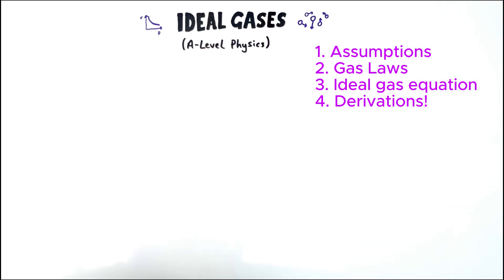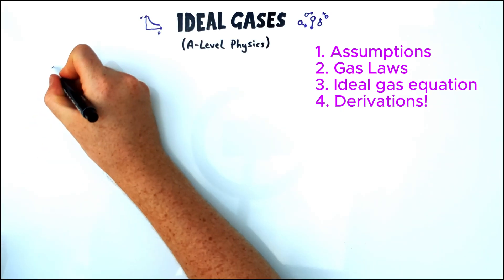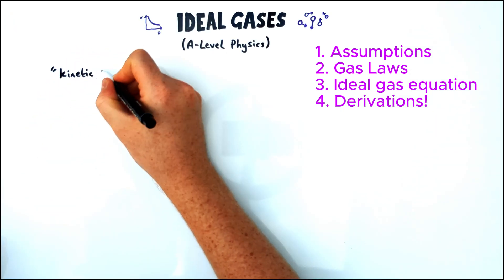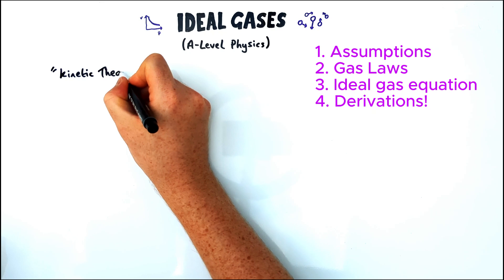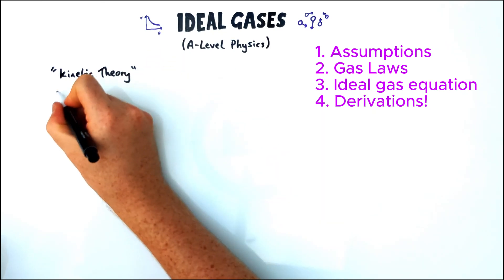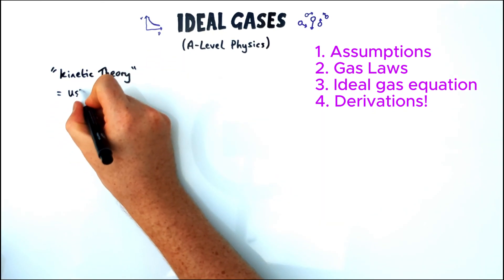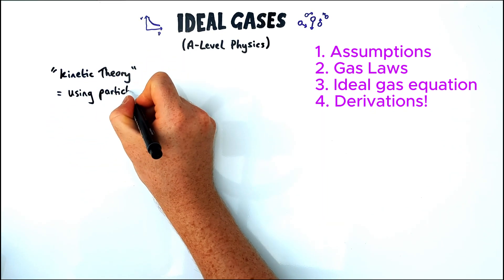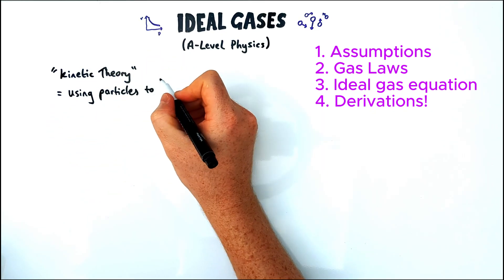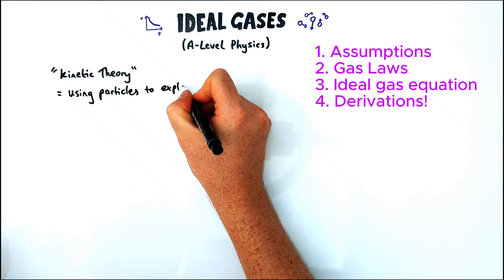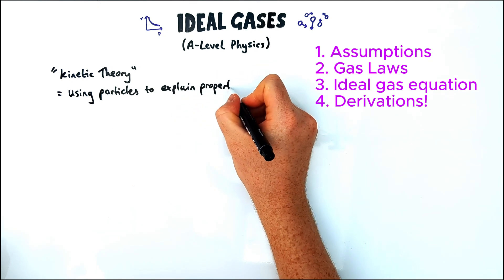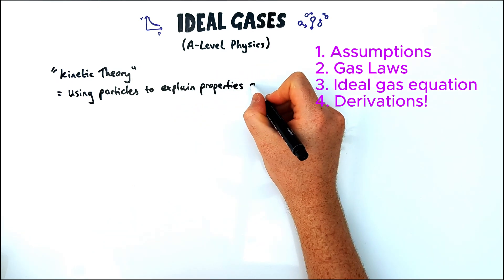Ideal gases can be a really tricky topic at A-level physics, especially if you don't do A-level chemistry. So in today's video we're going to look at some of the assumptions behind ideal gases, some of the gas laws, and then look at the ideal gas equation and what we can derive from it.